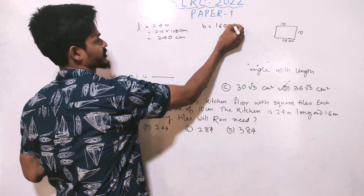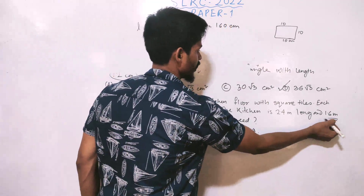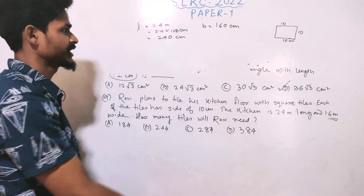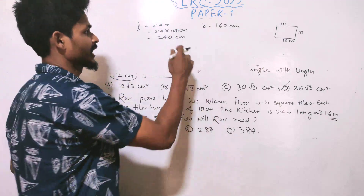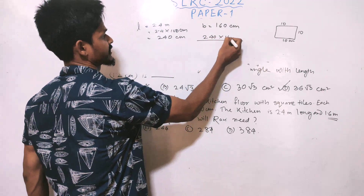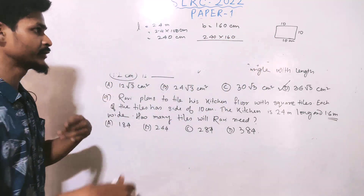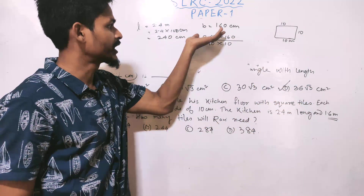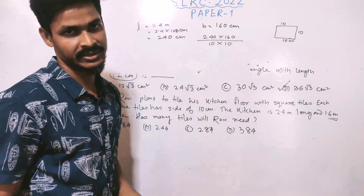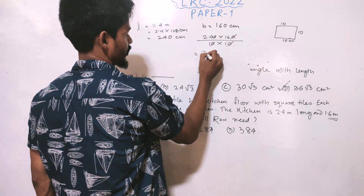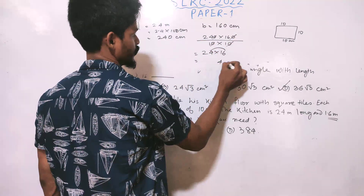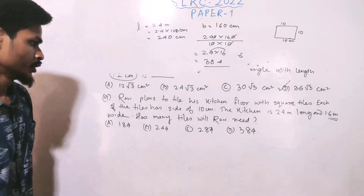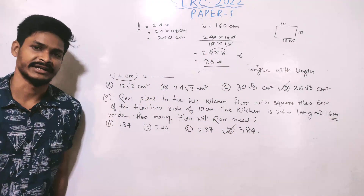Kitchen area equals 240 into 160. Tile area equals 10 into 10 equals 100 cm². Number of tiles equals kitchen area divided by tile area: 240 times 160 divided by 100 equals 384 tiles. Answer is option D: 384 tiles.